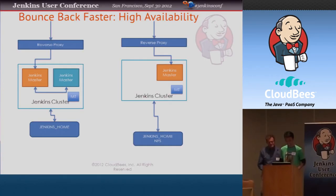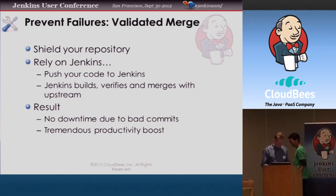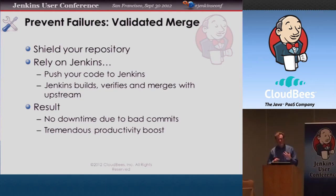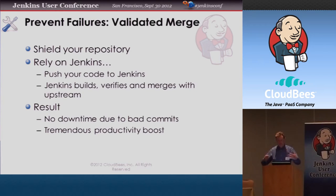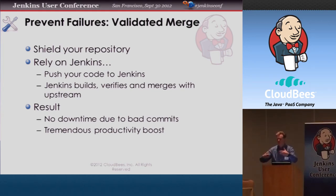Mark has a few more slides. Just quickly — there's the concept of validated merge. Instead of pushing your code into the main branch of the repository and having tests run, and if there's a problem having to back it out, Jenkins can support something much better: a shadow repository. You push the code into that, we run the build tests against it, and if they pass, those get pushed into the main repository. So no bad code ever gets to the mainline of your source code repository. This is basically the same thing shown in the keynote on BuildHive — the exact same workflow but on your own instance.